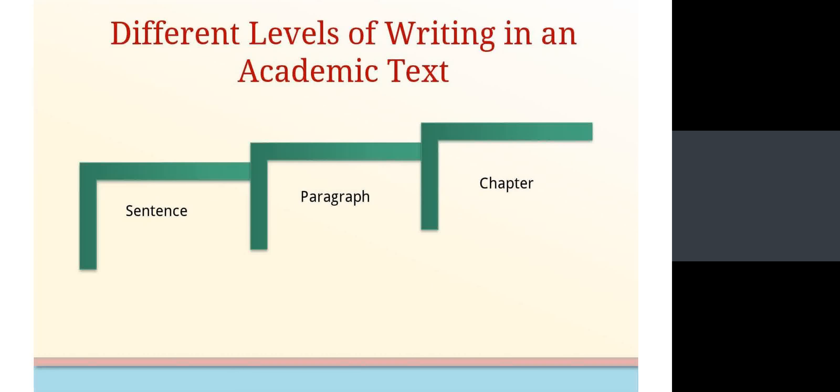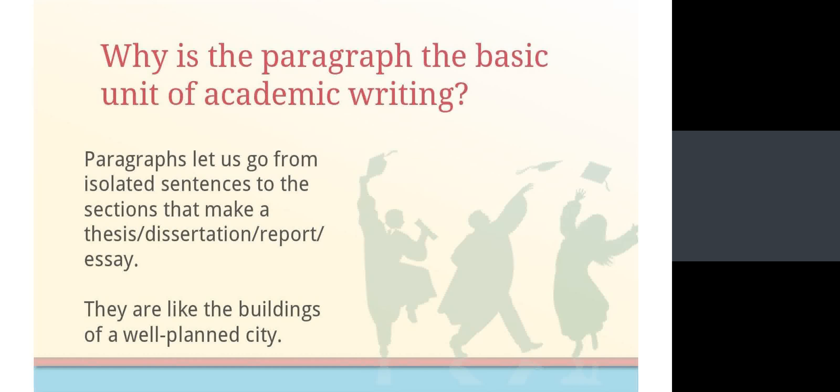It is time to present paragraphs, the focus of today's meeting. As you can see in the slide, there are different levels of writing in an academic text, especially in a dissertation. They follow a sequence that begins with sentences, ends with chapter or section, and has paragraphs as the bridge between those ends. Such a role makes paragraphs the basic unit of academic writing. Because they are the transformation of isolated sentences into coherent wholes, which can be connected to become sections and chapters that let us present and defend arguments.